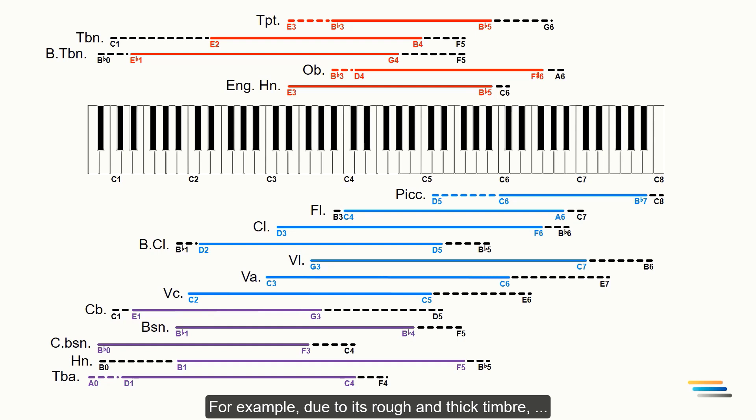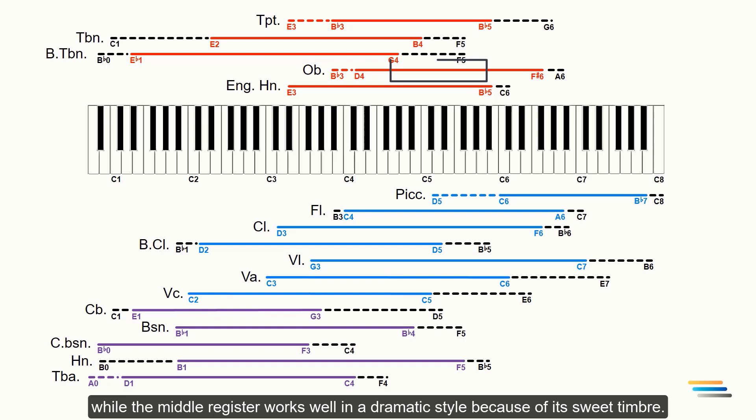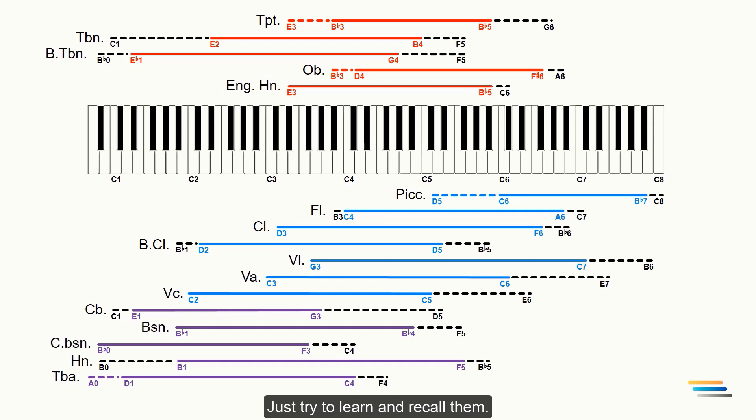For example, due to its rough and thick timbre, the lower register of the oboe is effective in an ironic or comedic style, while the middle register works well in a dramatic style because of its sweet timbre. We will use all of these registers throughout the lesson. Just try to learn and recall them.